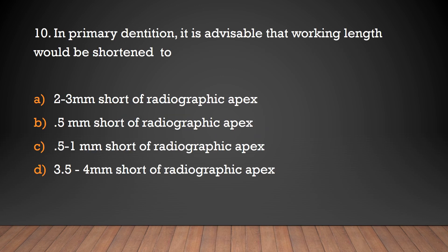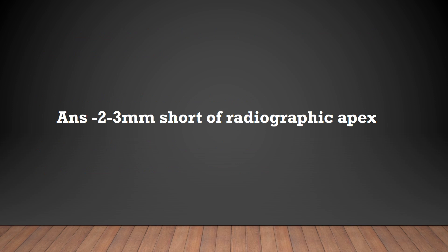In primary dentition, it is advisable that the working length would be: 2-3mm short of radiographic apex, 0.5mm short of radiographic apex, 0.5-1mm short of radiographic apex, or 3.5-4mm short of radiographic apex. Answer: 2-3mm short of radiographic apex.